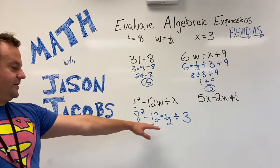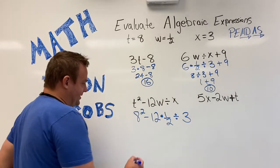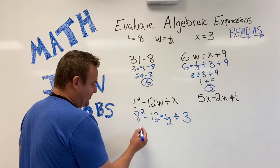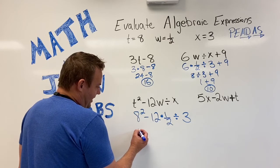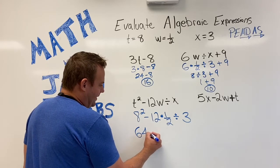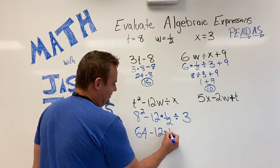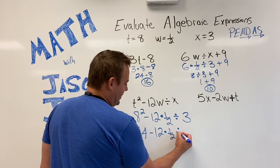All right. First parentheses. No, how about exponents? Yeah, we have some exponents. 8 squared means 8 times 8. 8 multiplied by 8. That's 64 minus 12 times 1 half divided by 3.